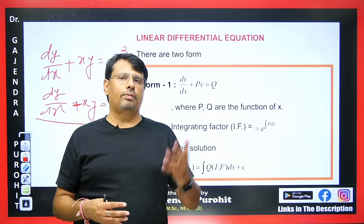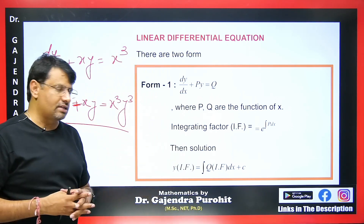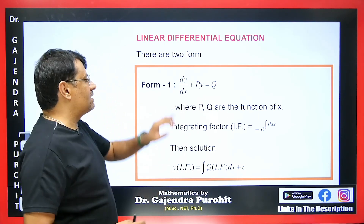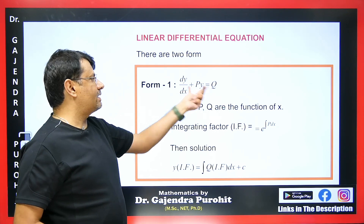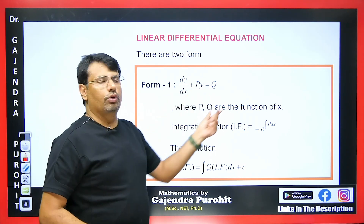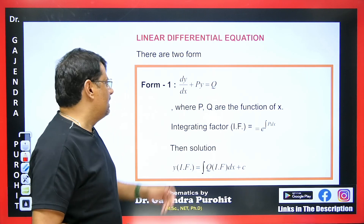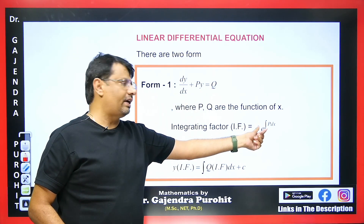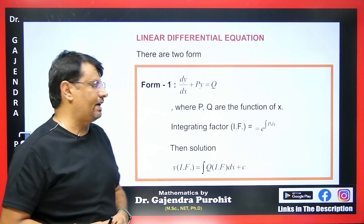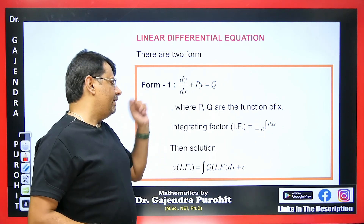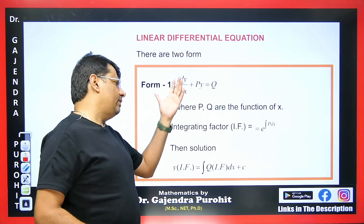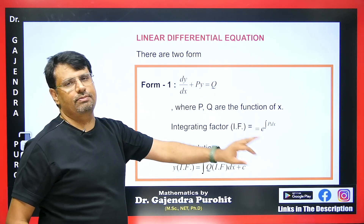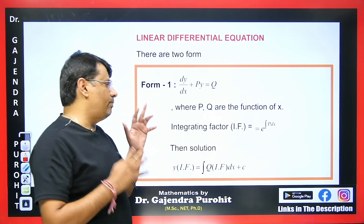When the equation is not linear in y, we'll approach it differently — I'll explain how it can be reduced to a linear form in an upcoming class. Whenever y appears once and x appears twice, it will be linear in y. P and Q will either be functions of x or constants. To solve this type of equation, we find the integrating factor, which is e to the power of the integral of P dx. The answer takes the form y·IF = ∫Q·IF dx + c.